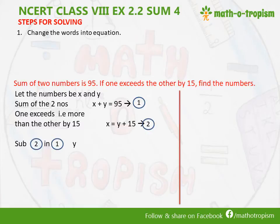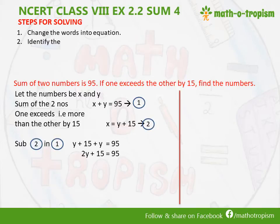We will substitute equation 2 into equation 1. So instead of x, we write y plus 15, plus y, equals 95. So 2y plus 15 is 95. So we have arrived at an equation.